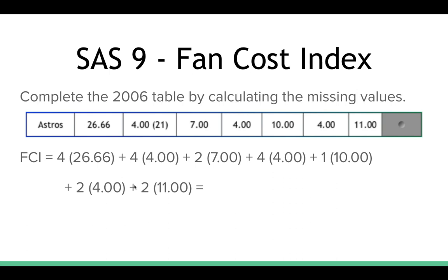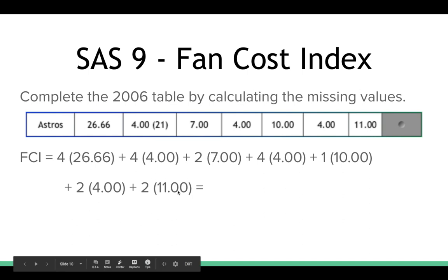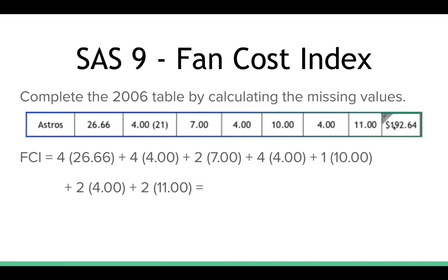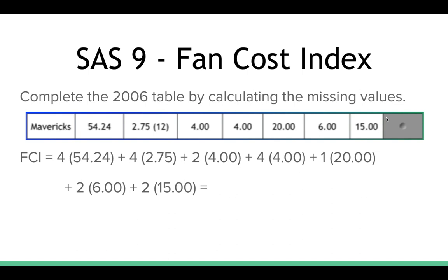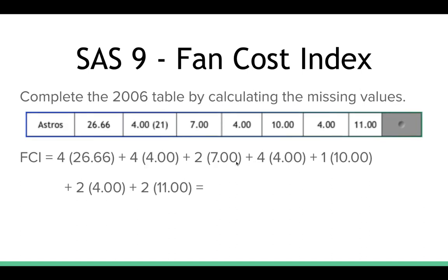Complete the 2006 table by calculating the missing values. For the Astros: four average-price tickets at $26.66, four small soft drinks at $4, two small adult beverages at $7 each, four hot dogs at $4, parking at $10, two programs at $4, and two hats at $11. The FCI for the Astros in 2006 is $192.64.